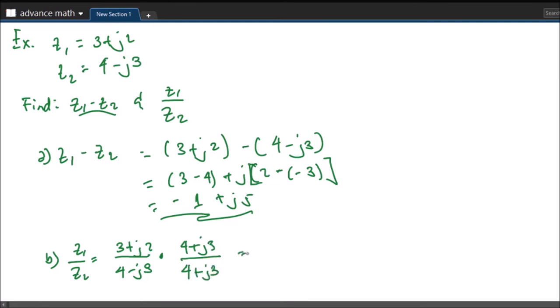So we will end up with 3 times 4, that will be 12. Then we have 3 times J3, so that will be plus J9. We have 4 times J2, that will be plus J8. Then we have J2 times 3, so it is 6 over.